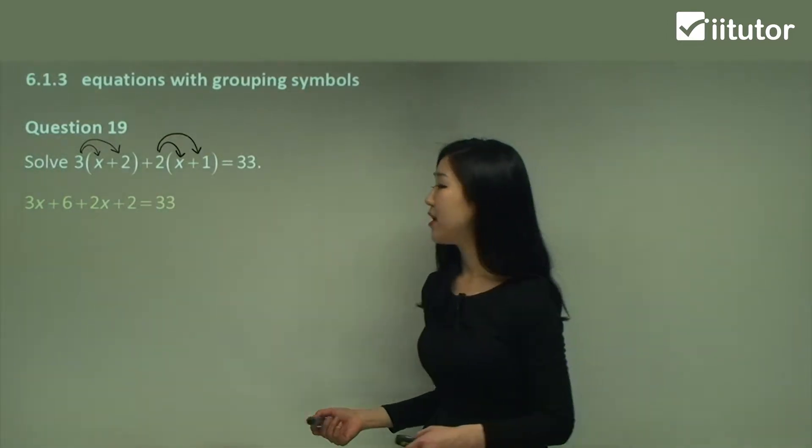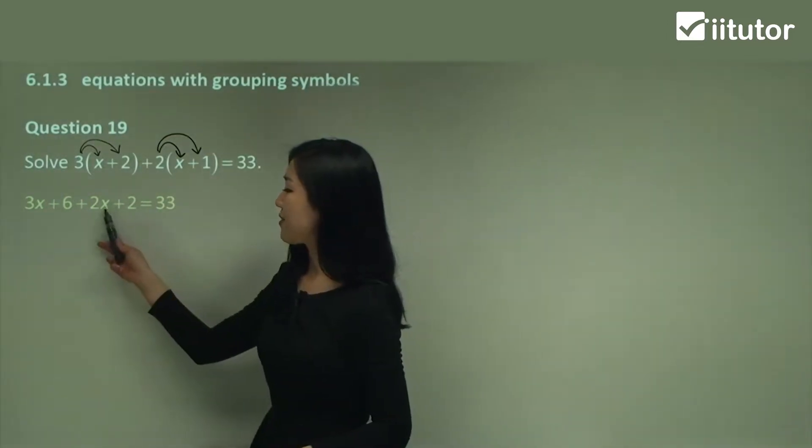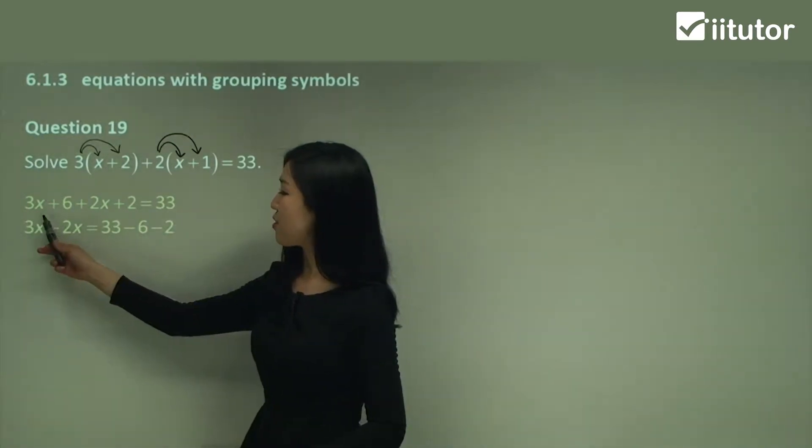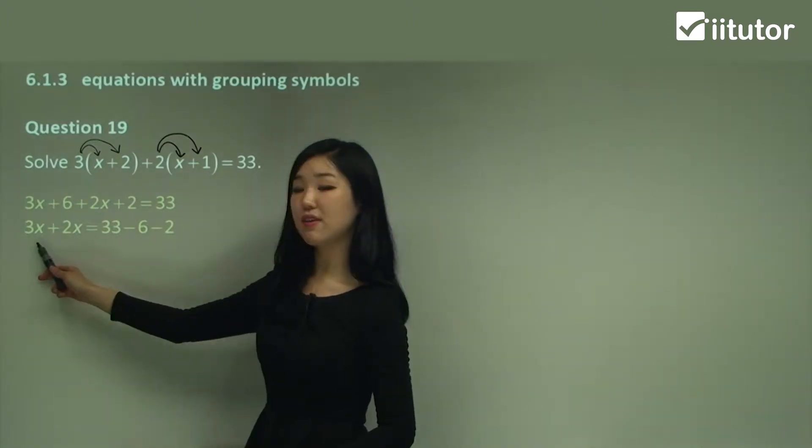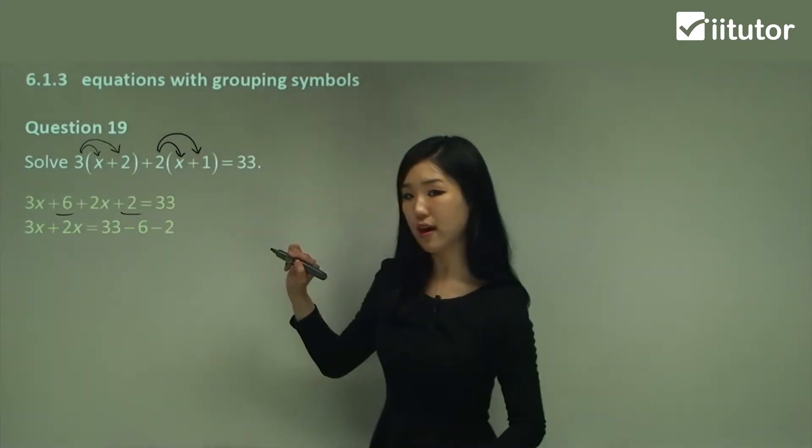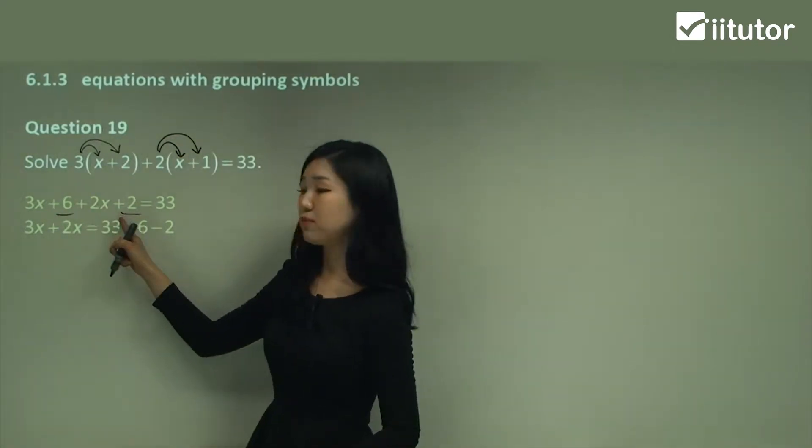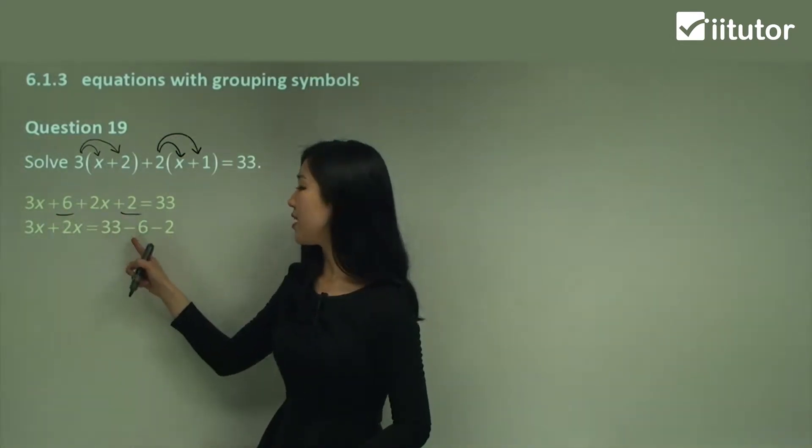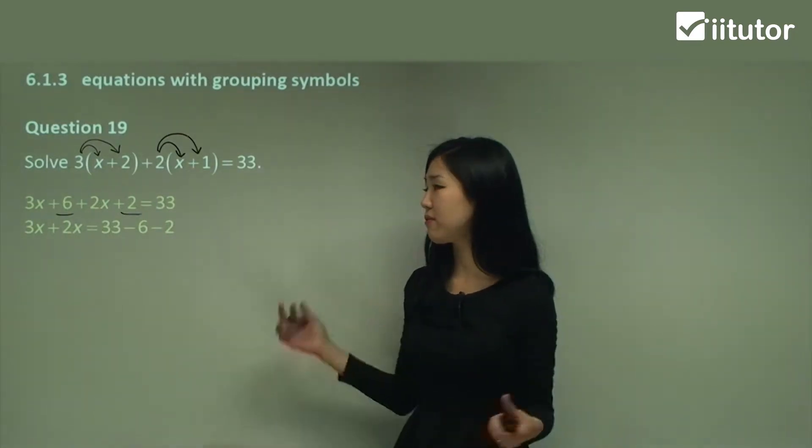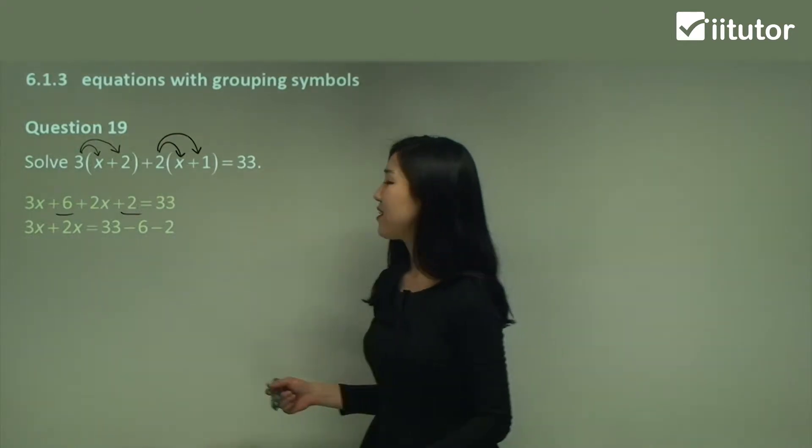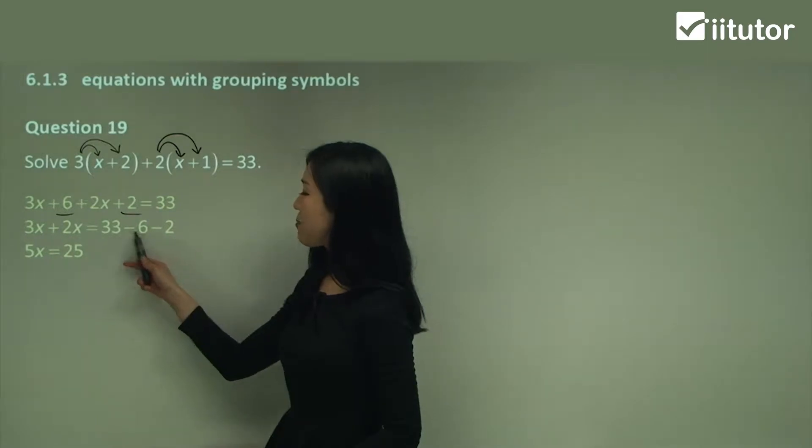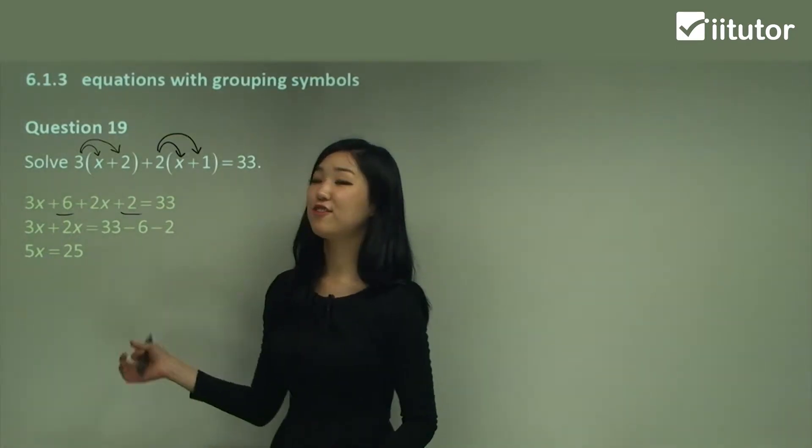Now gather the like terms. I'm going to gather my x's together and my constants together. You can see that 3x plus 2x I'm leaving on my left and the 6 and the 2 I'm going to move to the other side. See how it's plus 6 and plus 2, I'm going to make it negative 6 and negative 2 onto the other side. This is what we've been doing for the past few questions.